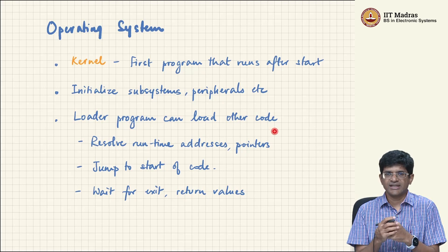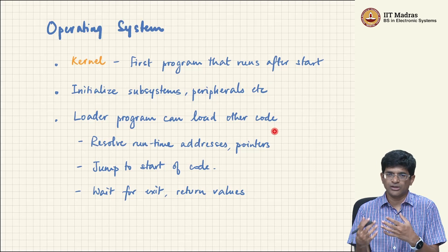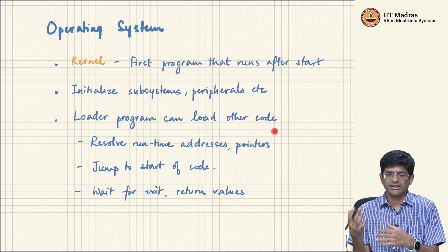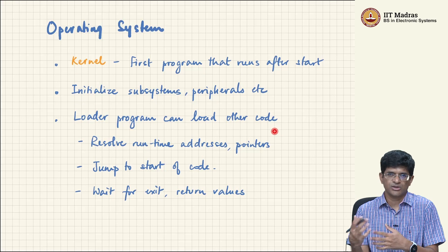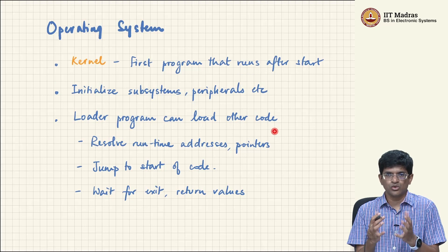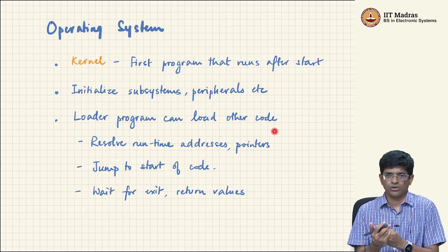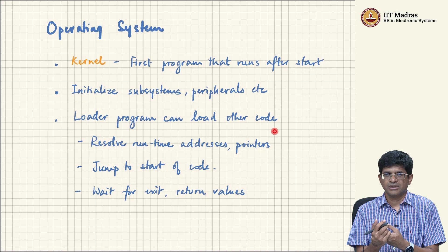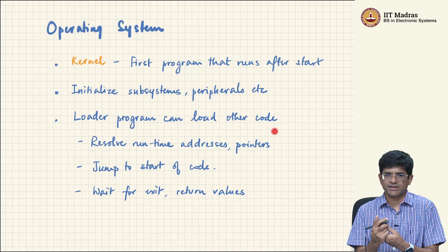The operating system takes over as the first program that runs on the system, and then says: any other program you need to execute, you do not need to put it into flash and reset the entire processor — I will take care of loading it into memory and jumping to the start so it can run. So bare metal and operating systems are the two primary modes in which a microcontroller or CPU-based system can operate. So far we have been looking primarily at bare metal systems; there will be context later where we also look at the basics of operating systems.